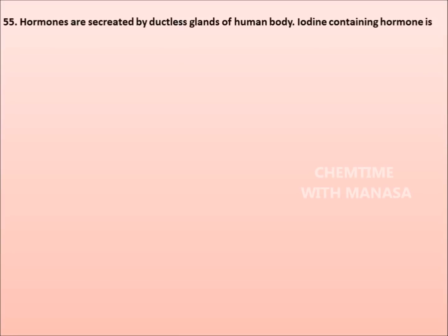Question number 55. Hormones are secreted by ductless glands of a human body. Iodine containing hormone is: testosterone, thyroxine, adrenaline, insulin. Correct answer is option B: Thyroxine.